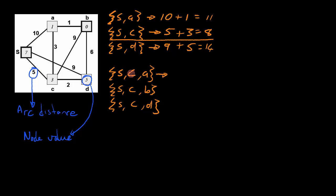So the arc distance between S and C is 5. The arc distance between C and A is 3. And the node value of A is 1. That gives us a total distance of 9 units.